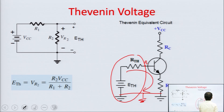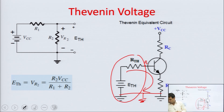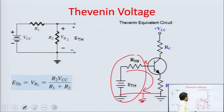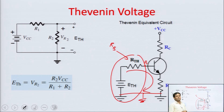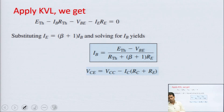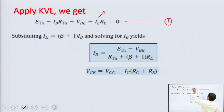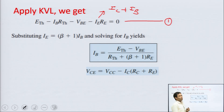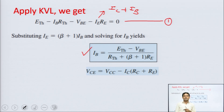The input KVL equation is written for the input loop and the output KVL equation is through RC. Applying input KVL: ETH minus IB·RTH minus VBE minus IE·RE equals zero. Some people call RTH the base resistance. From this, IB equals ETH minus VBE upon RTH plus (1+β)RE. We can then find collector current IC equals β·IB.